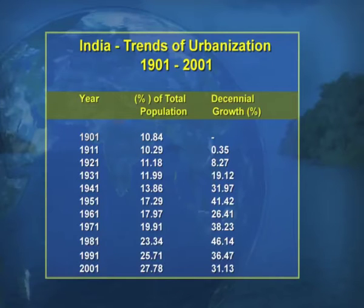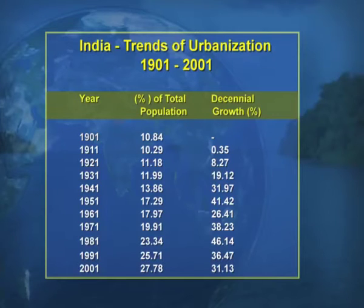Now look at the screens children and you'll see the trends of urbanization. There are two columns besides the census years. The first column tells you about the percentage of the total population, and the second column tells you about the growth of the population in that particular census year. So from 1901 to 2001, the percentage of the total population increased from 10.84 to 27.84, which is quite a heavy increase in the population.